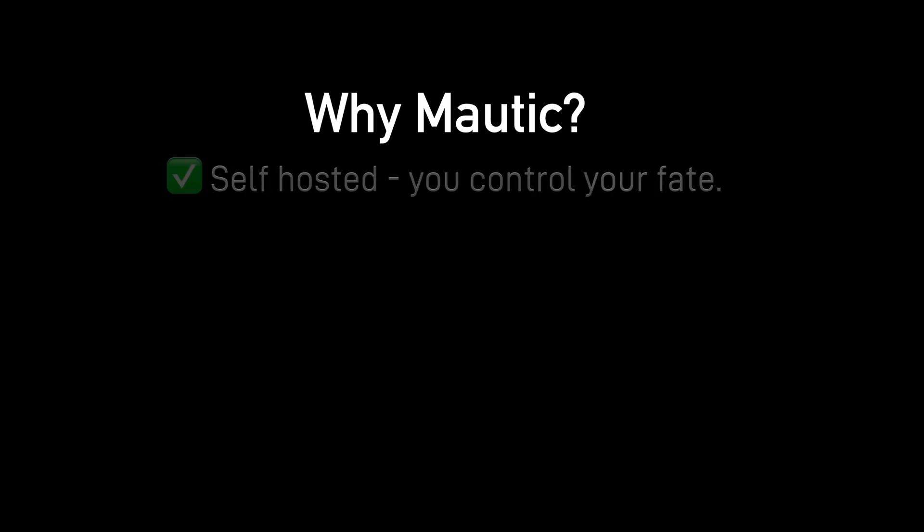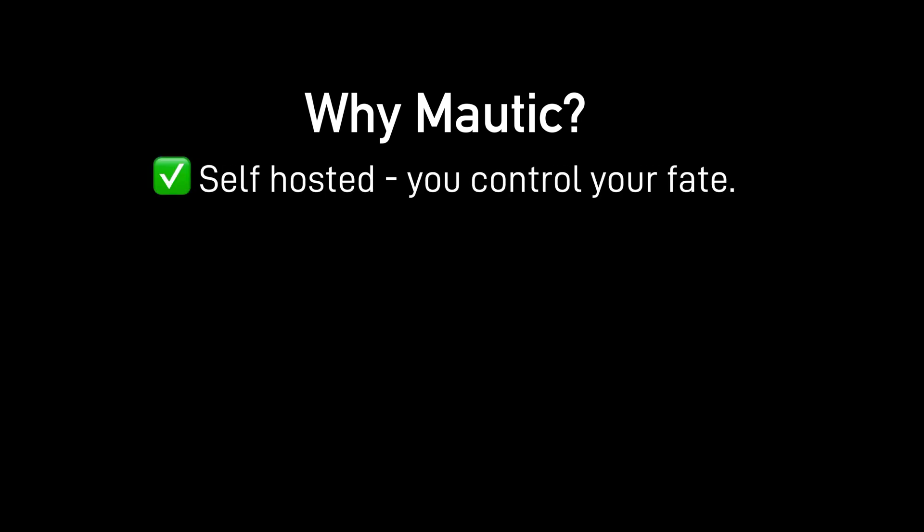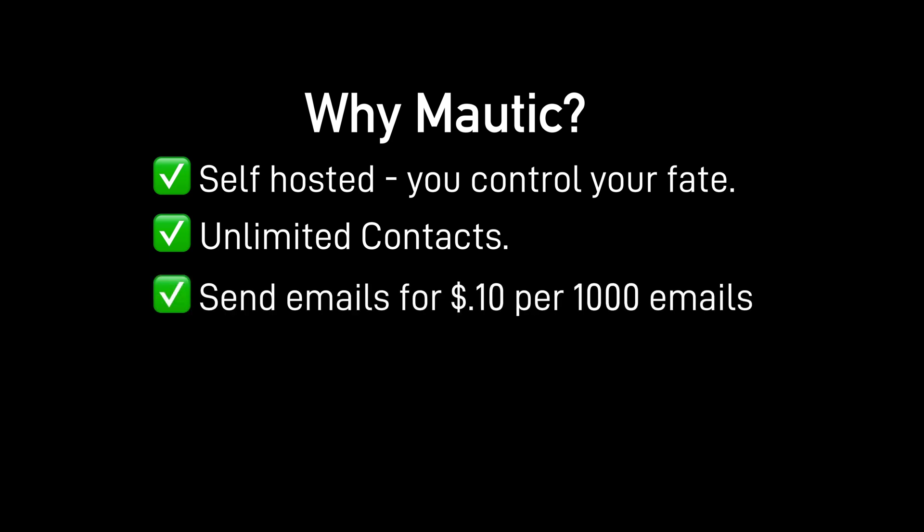So why would you choose Mautic with so many options out there? The number one reason to me is that it's self-hosted, so you control your own fate. No one else has access to your data, assuming you don't get breached or compromise your security. You also have unlimited contacts — you won't be punished for having more leads or not converting them at a certain dollar amount per lead per month. And it's really cost effective. If you use something like Amazon SES, you'll be able to send emails for as little as 10 cents per 1,000 emails. The deliverability is going to be great because you're relying on Amazon SES. If you still have issues with deliverability, you can add your own dedicated IP with SES for a little bit less than the cost of a cup of coffee once a week.